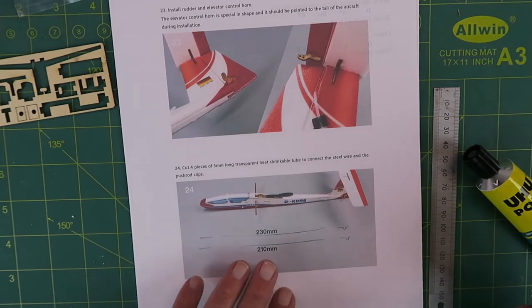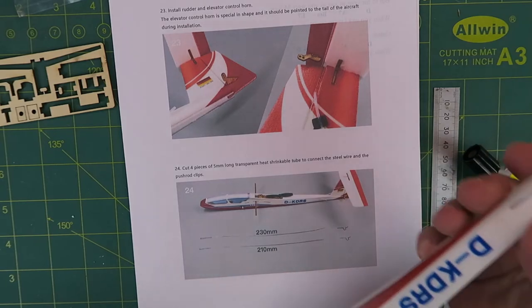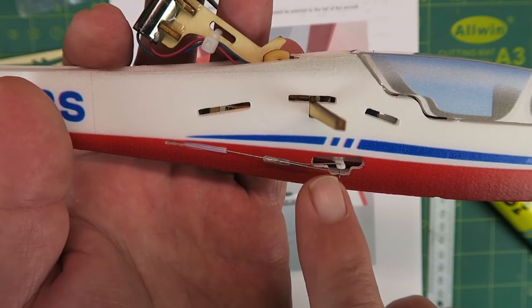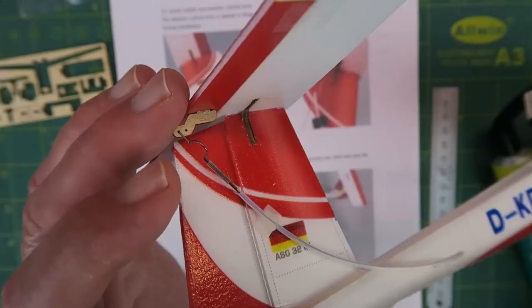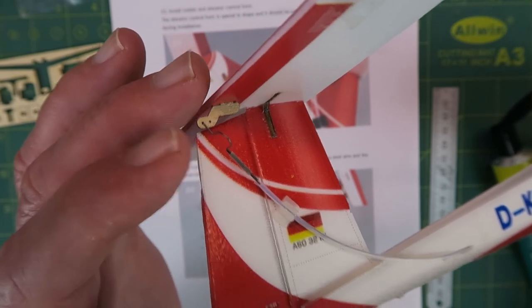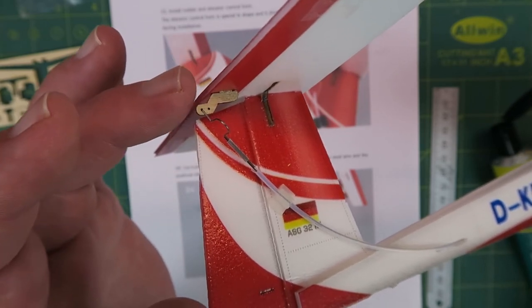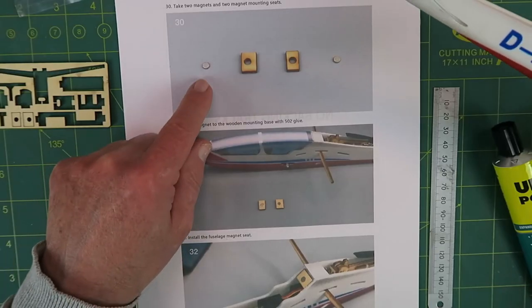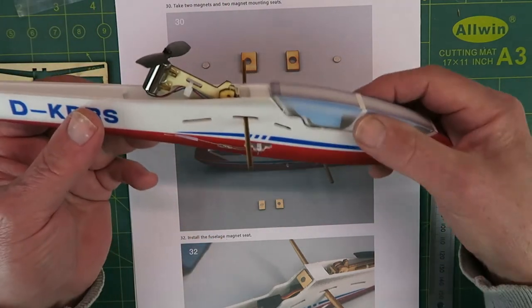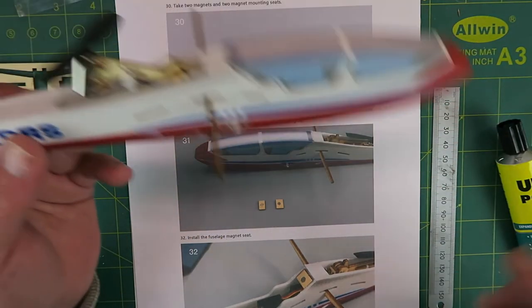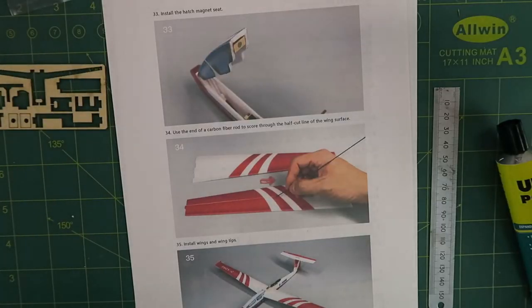They fit in quite nicely and then you have to insert and make up the control wires. There is some heat shrink tubing supplied and with that you just slide it over the ends of the wire and the pushrod clips at each end there. You can see the hoop arrangement for making any adjustments that you need—in this case the elevator. The next task then is to put the little magnets in place which hold the canopy there. So I'll go ahead and do that, after which we'll be on to the wing assembly.